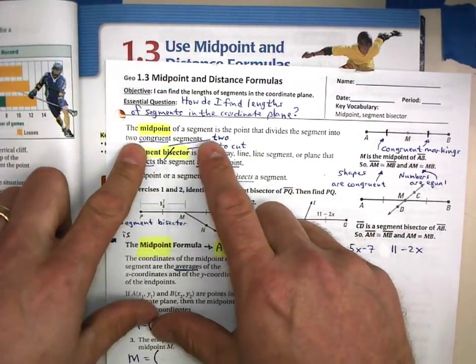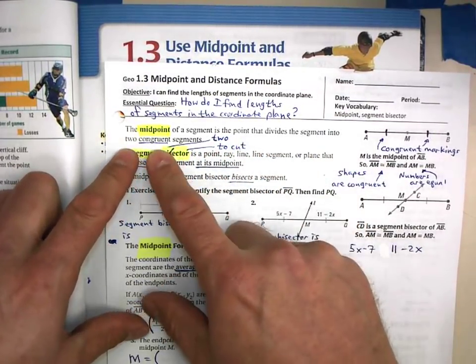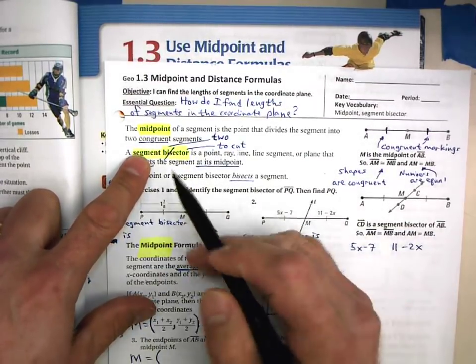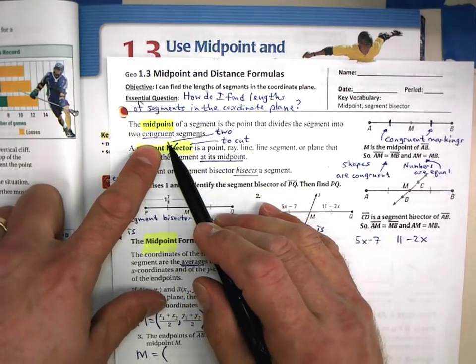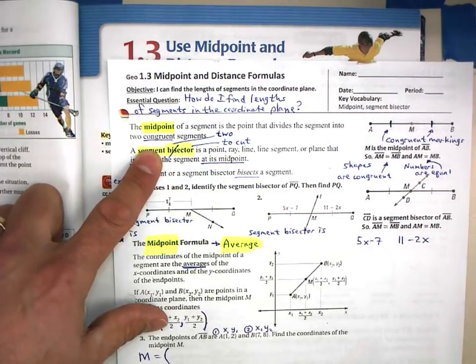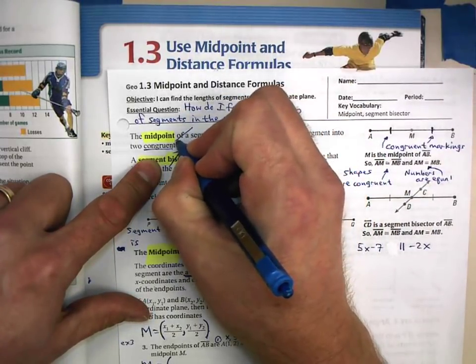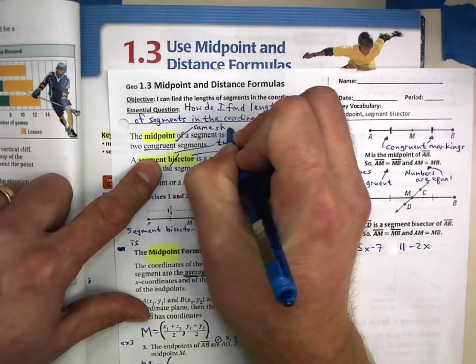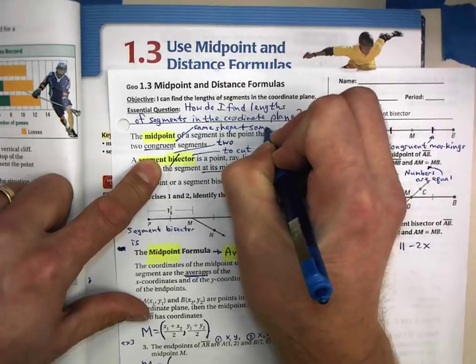A midpoint of a segment is the point that divides the segment into two congruent, hey, that is a new term for us. Congruent, what does the term congruent mean? It means same shape. In fact, let's go ahead and do that. Let's write that in there. Same shape and same size. That's what congruent means.